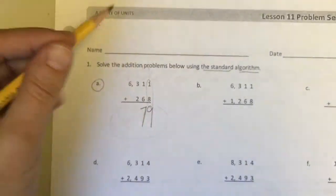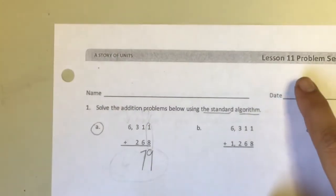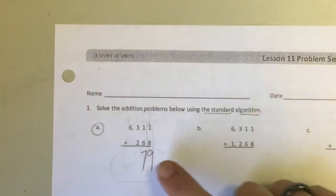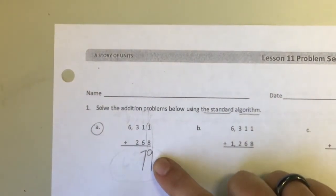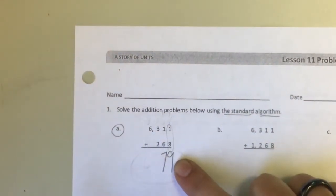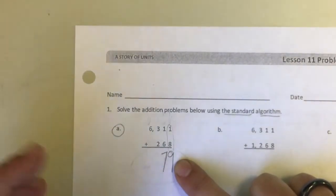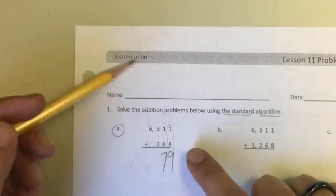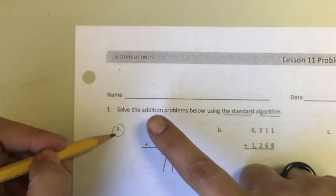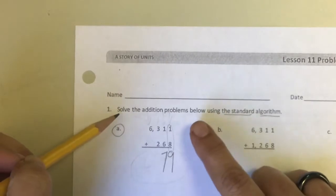Today I'm going to make a video for problem set 11. This is going to be adding multi-digit numbers using place value, and you can see I have started with 1a and the directions for number one.